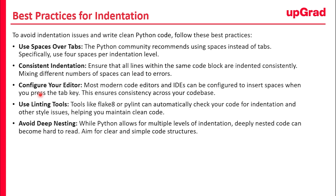Now let's look at the best practices for indentation. To avoid indentation issues and write clean Python code, follow these best practices. Number one: use spaces over tabs. The Python community recommends using spaces instead of tabs — specifically four spaces per indentation level. Avoid tabs as much as you can. Number two: consistent indentation. Ensure that all lines within the same code block are indented consistently; mixing different numbers of spaces can lead to errors. Number three: configure your editor. Most modern code editors and IDEs can be configured to insert spaces when you press the tab key, ensuring consistency across your entire codebase.